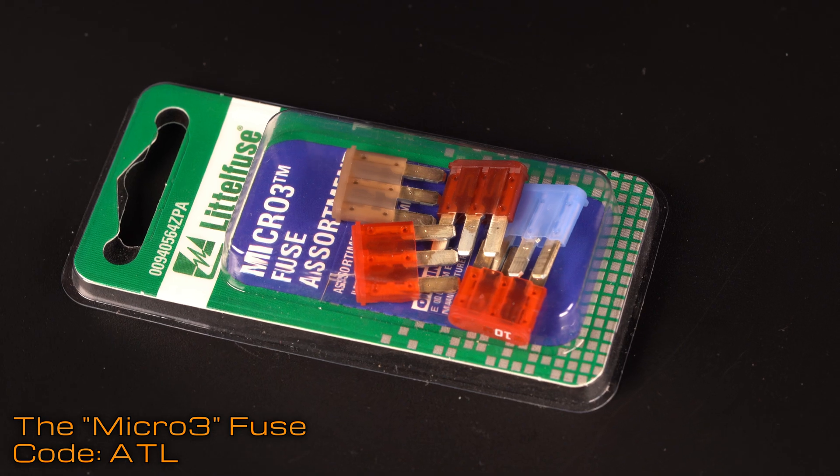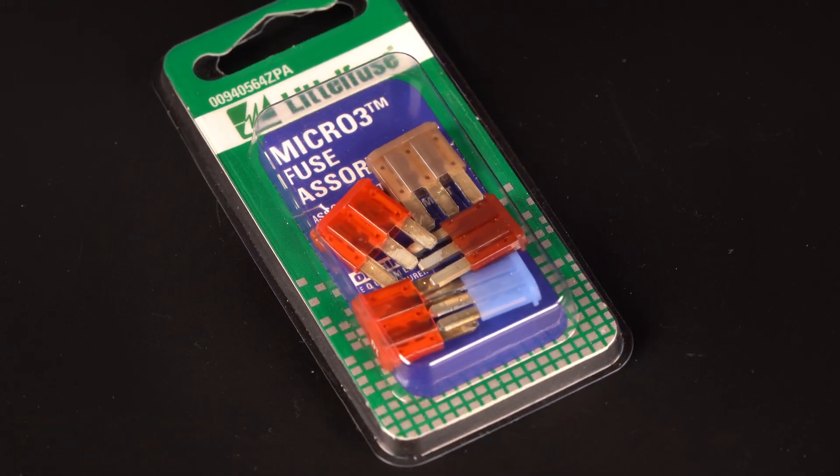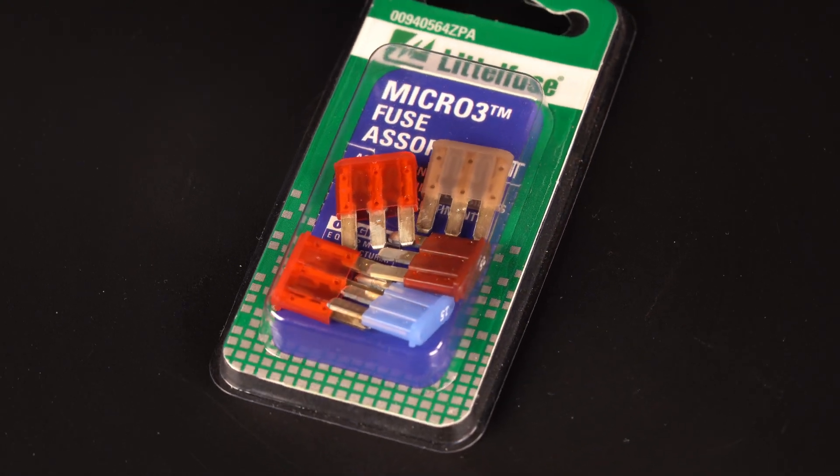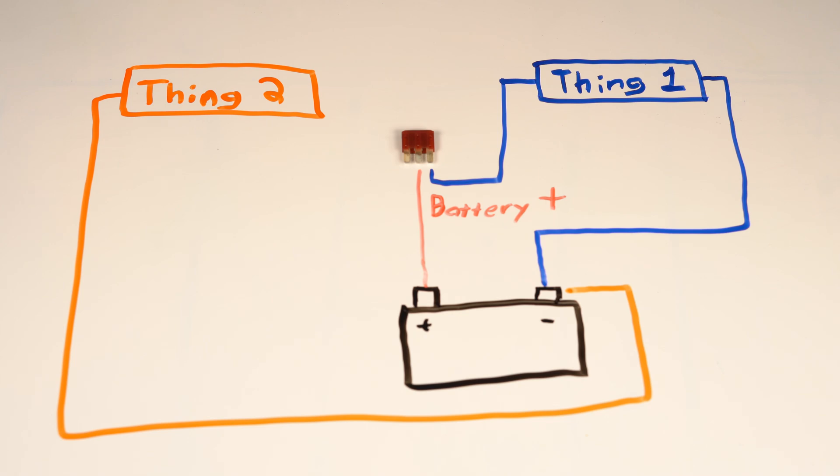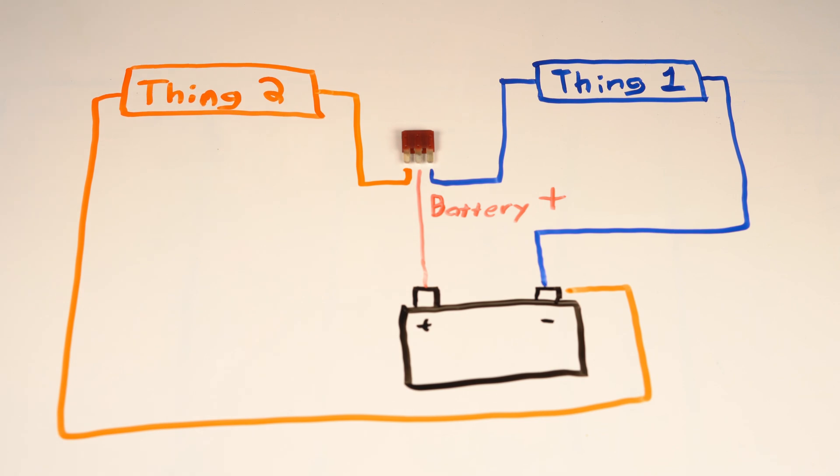However, the Micro 3 takes compact design a step further. Someone realized that so many fuses in the fuse box share common circuitry, so circuitry splits could occur at the fuse itself. The center contact point of a Micro 3 fuse is the common point, and the split occurs in the fuse element itself, so the left leg and right leg go to two different components.